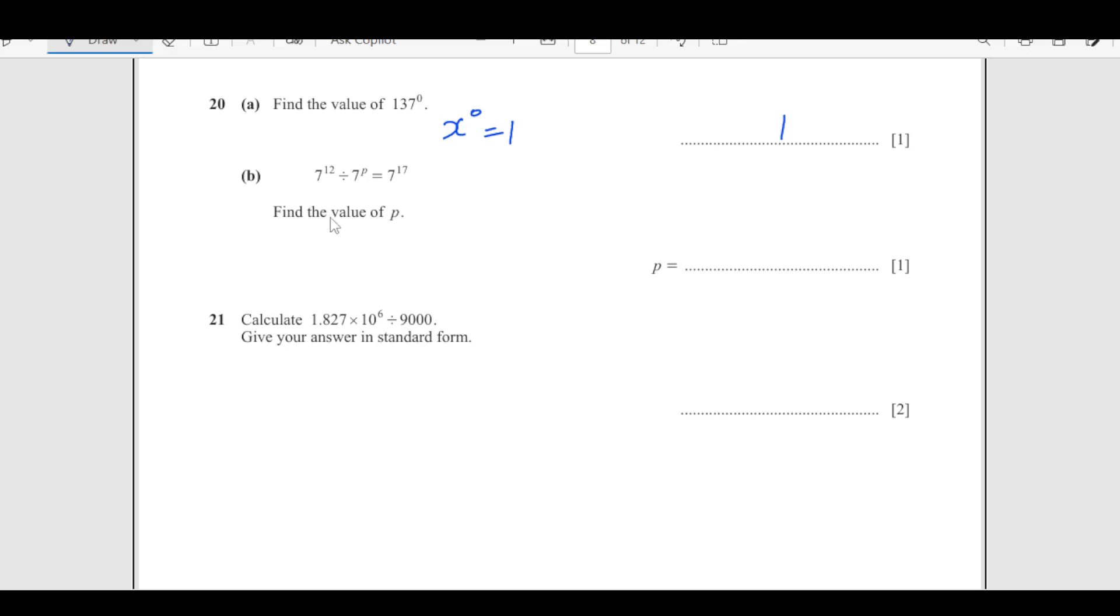Now find the value of P. As the base is same, x to the m divided by x to the n, then we always subtract the powers, law of exponents. So this is going to be 7 power 12 minus P equals 7 power 17. So that is 12 minus P equals 17.